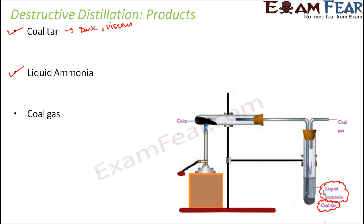Certain vapors do not get condensed and do not form any layer in the vertical tube. Instead, they just go out of the vertical tube — we can actually see some vapors coming out of this tube. These vapors are nothing but coal gas, and that's how we get another product from coal.